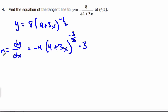And so, this is the equation of the tangent slope. And I want to find the slope at the point (4, 2). So, I'm going to plug in the 4 in for my x.